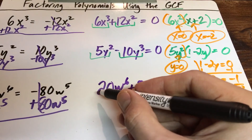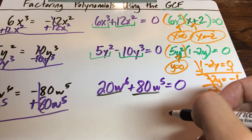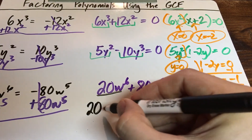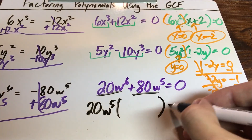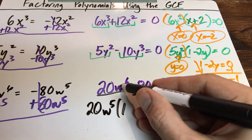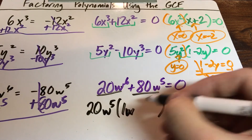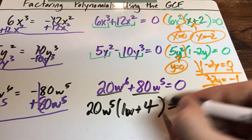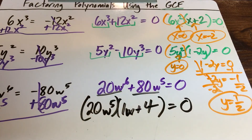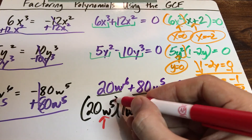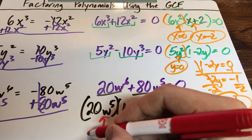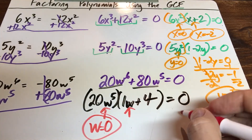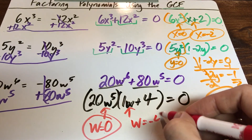Grand finale: both 20 and 80 share a GCF of 20, and they both have at least five W's. The GCF is 20w⁵. Dividing: 20 divided by 20 is one, six W's minus five leaves one W; 80 divided by 20 is four, five W's minus five leaves none. Zero product property: the first term gives w = 0. For w + 4 = 0: w equals negative four, because negative four plus positive four equals zero.